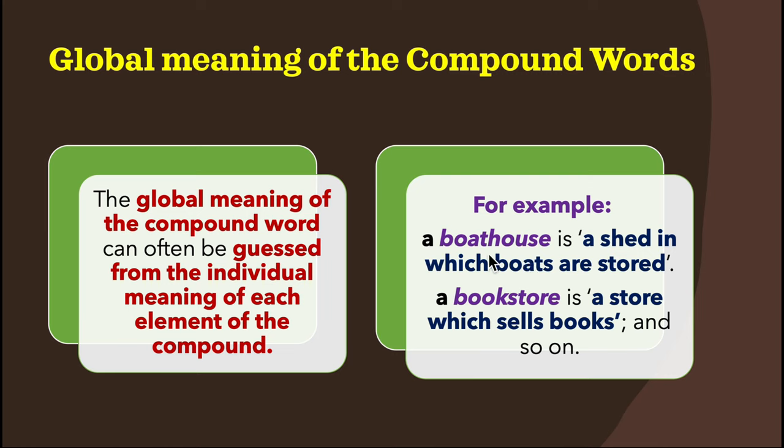More examples of blending: European + television = Eurovision; multiple + university = multi-university; news + broadcast = newscast; parachute + troops = paratroops; television + broadcast = telecast; travel + catalogue = travelogue. In all these cases, the beginning of one word and the end of another are joined together to form a new word — that is called blending.